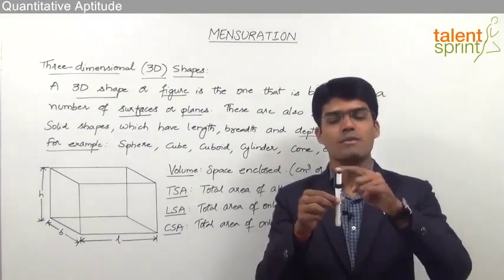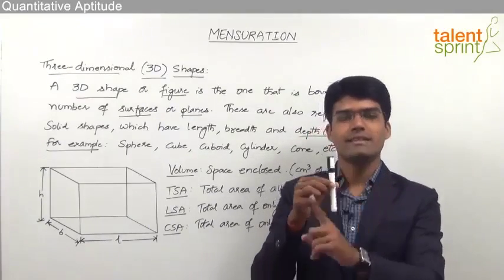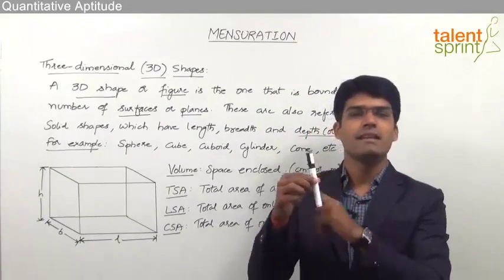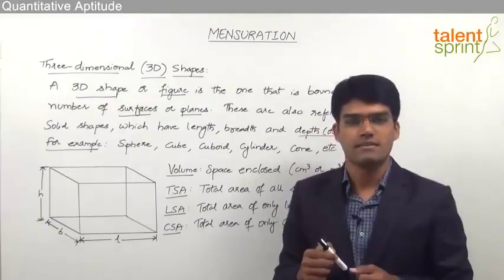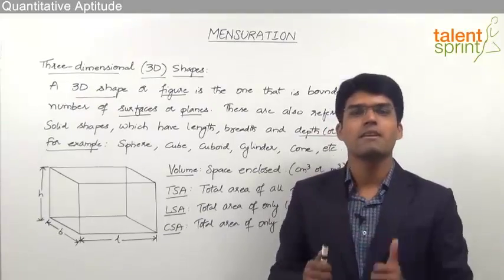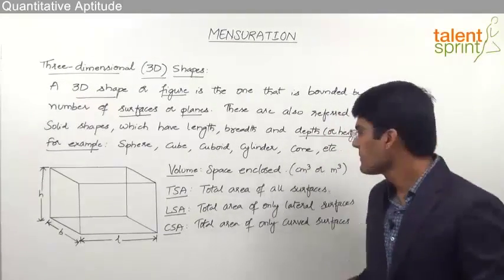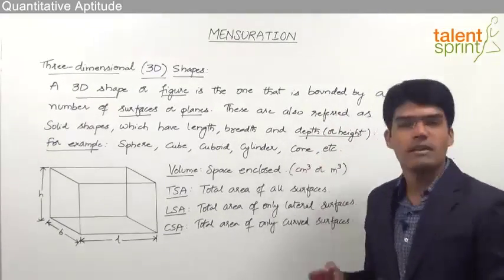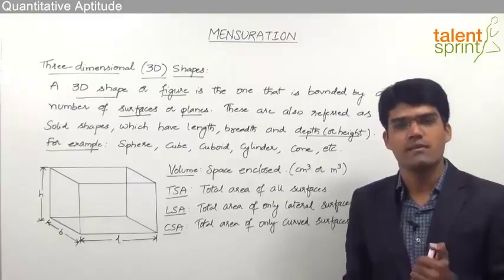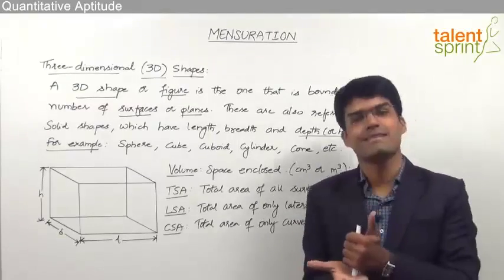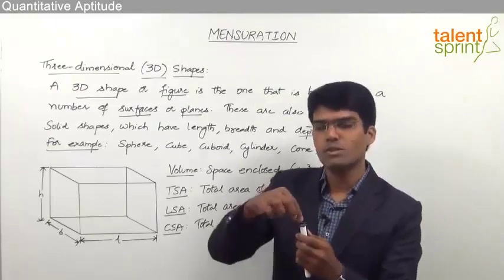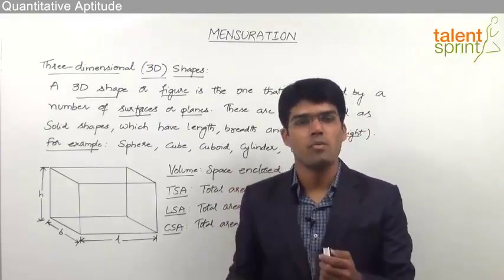The base is a circle, the top is a circle, and then there is a lateral curved surface. Such a figure is referred to as a cylinder.